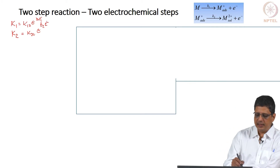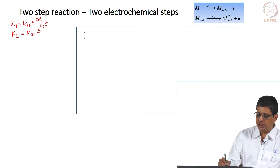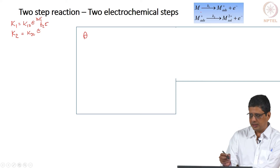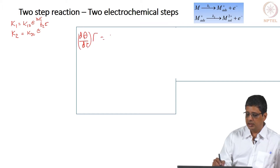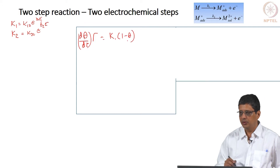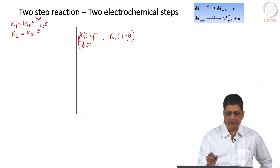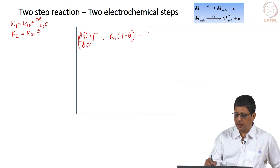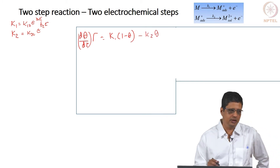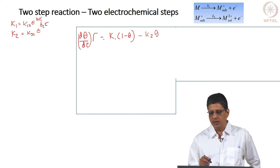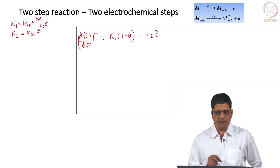If I say that theta is the fractional surface coverage for M-plus adsorbed, I can write: gamma · d(theta)/dt = k1·(1−theta) − k2·theta. The expression will look similar to what you got before, except that k2 is now a function of potential, whereas previously k2 was a constant.